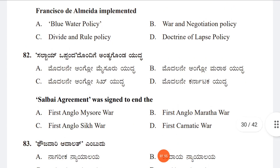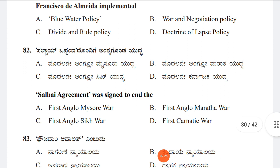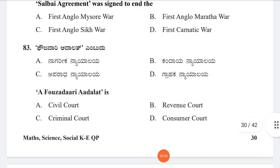Question 82: The Salva Agreement was signed to end which war? Option A: First Anglo-Mysore War, Option B: First Anglo-Maratha War, Option C: First Anglo-Sikh War, Option D: First Carnatic War. The answer is B, First Anglo-Maratha War, which was ended with the Salva Agreement between the Marathas and the British.